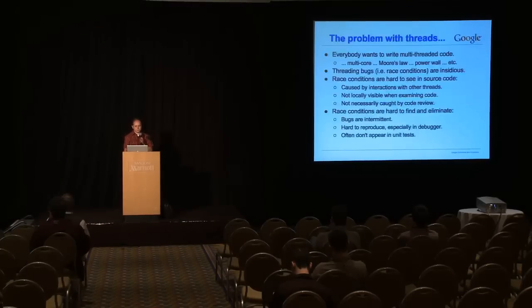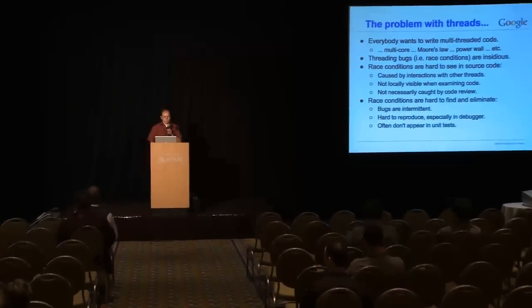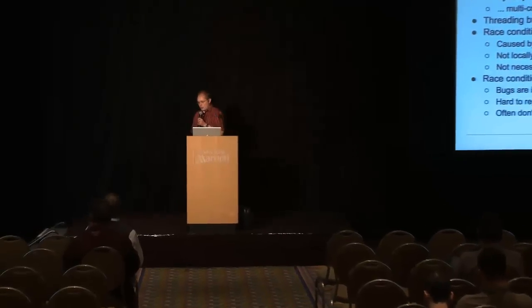So why do we need thread safety annotations? Most of you know at least some of this. Everybody wants to write multi-threaded code. Multi-threaded code have race conditions that are very insidious errors. They are hard to see in the source code and don't show up in code review. They are hard to see because the actual bug is caused by an interaction with another thread that is not locally visible. Once they are in the code, they are hard to find and eliminate because they generate intermittent bugs that you can't reproduce in the debugger. So this is a serious problem.